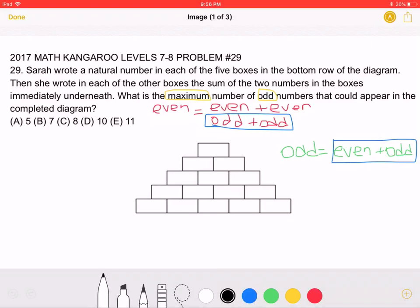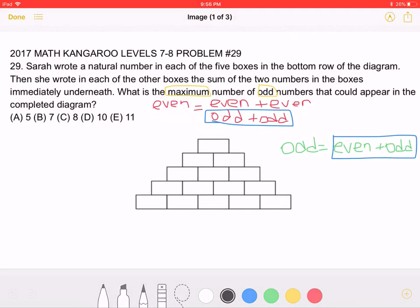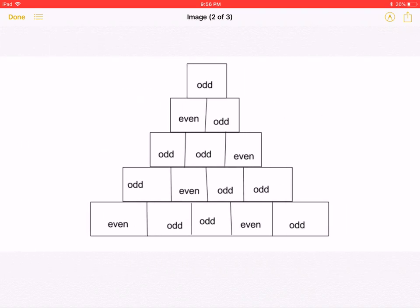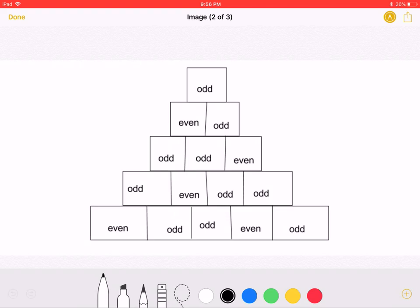In addition, an odd is equal to an even plus an odd. To start, I'm going to start with an odd number in the top to get the maximum number of odd numbers. So this odd is equal to an even plus an odd.